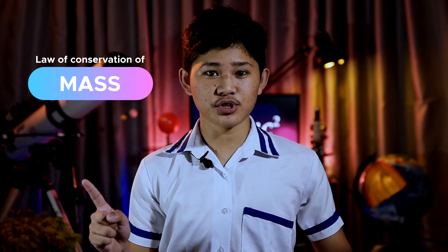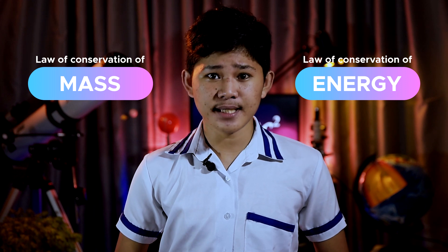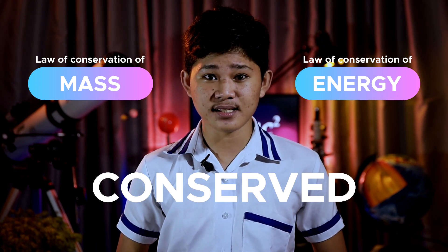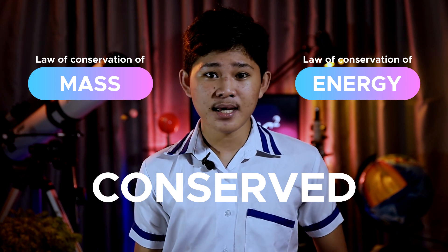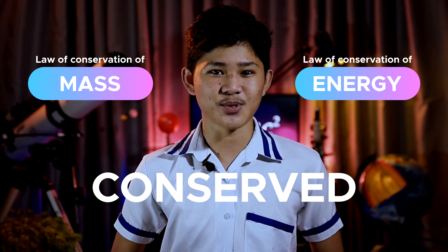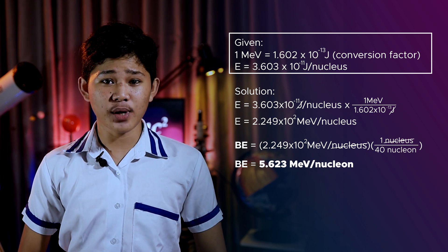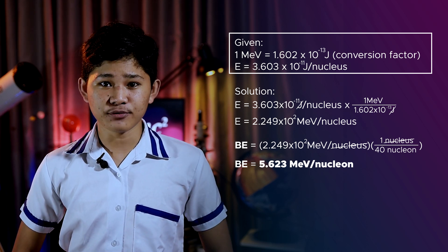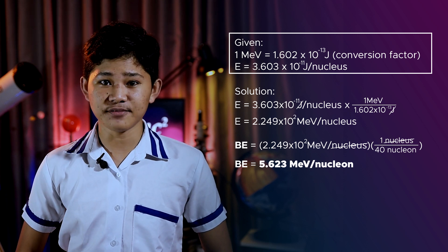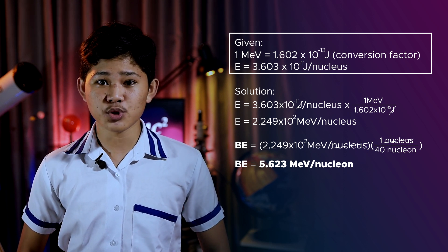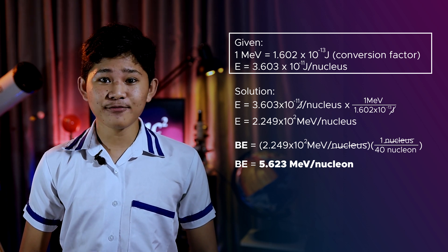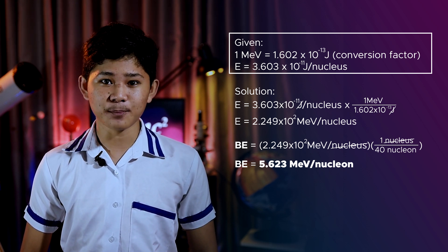The law of conservation of mass and the law of conservation of energy set forth that mass-energy is individually conserved in all the processes of physical science, but both the reacting system and its surroundings must be taken into account. To convert the binding energy to MeV per nucleon, we will employ the conversion factor for converting joules into MeV and the number of nucleons which make up the nucleus. Therefore, the binding energy for calcium is 5.623 MeV per nucleon.